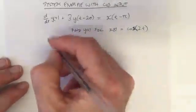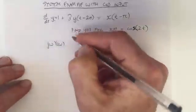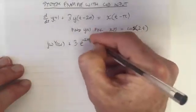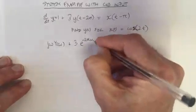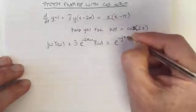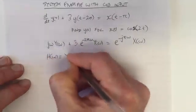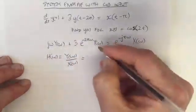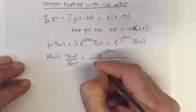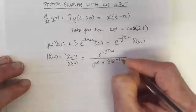We can start by writing out the Fourier transforms of each of these terms and we get j·omega times Y(ω) plus 3, and this is a time-shift so we've got e to the minus j·2pi·omega times Y(ω), equals e to the minus j·pi·omega times X(ω). Then we can collect terms: H(ω) equals Y(ω) divided by X(ω), which equals e to the minus j·pi·omega divided by j·omega plus 3·e to the minus j·2pi·omega.